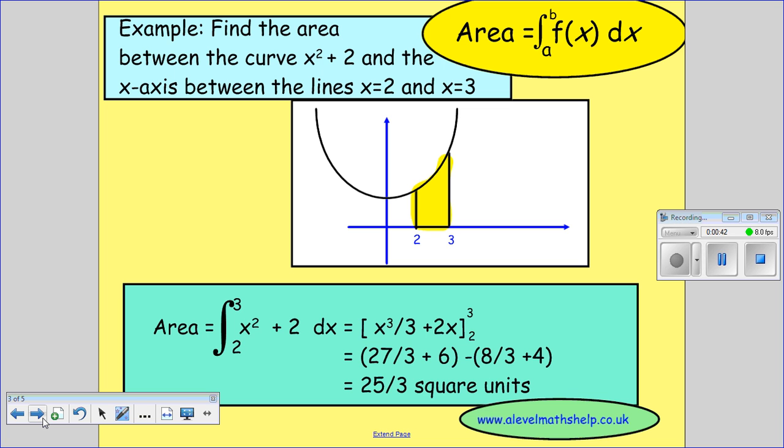So find the area between the curve x squared plus 2 and the x-axis between the lines x equals 2 and x equals 3. Sometimes it's helpful to draw a little sketch of what you're doing.